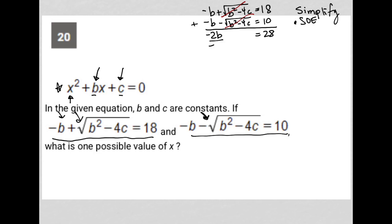I'm going to divide both sides by -2, not -2b. So -2b divided by -2. And what I'm left with is that b = -14.